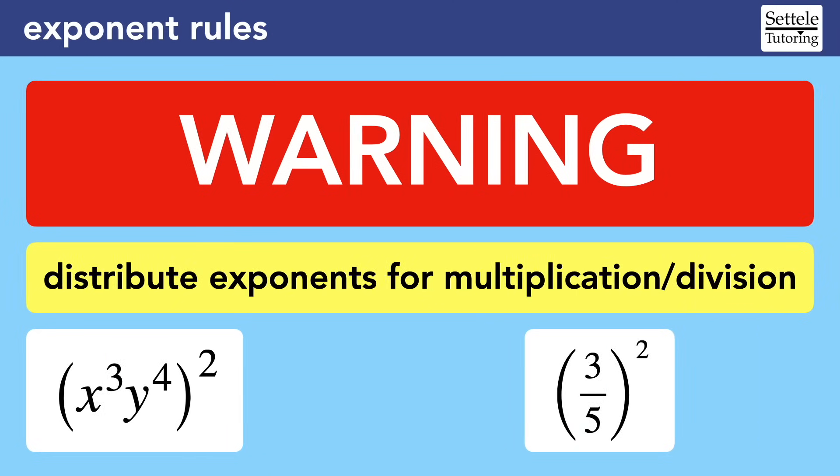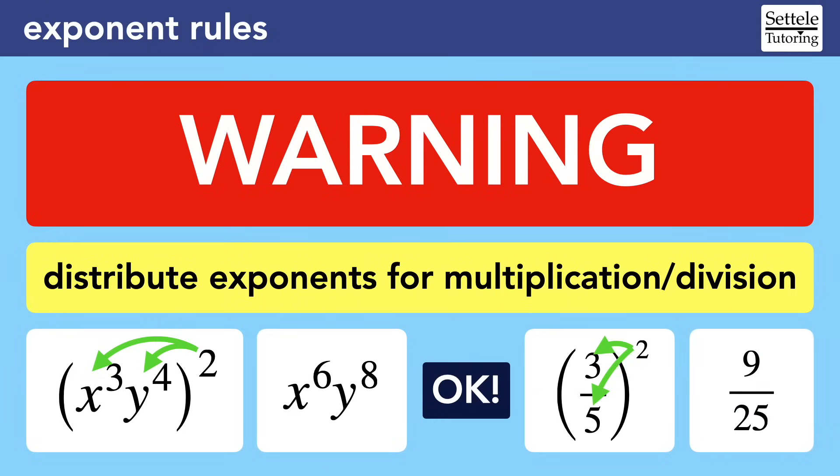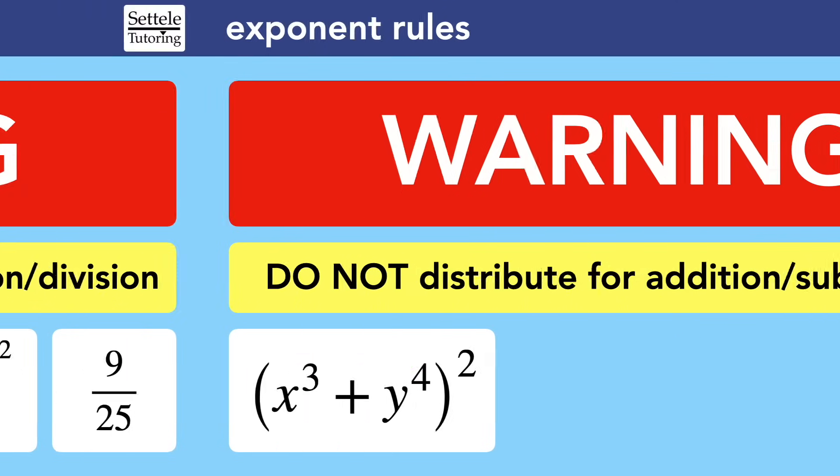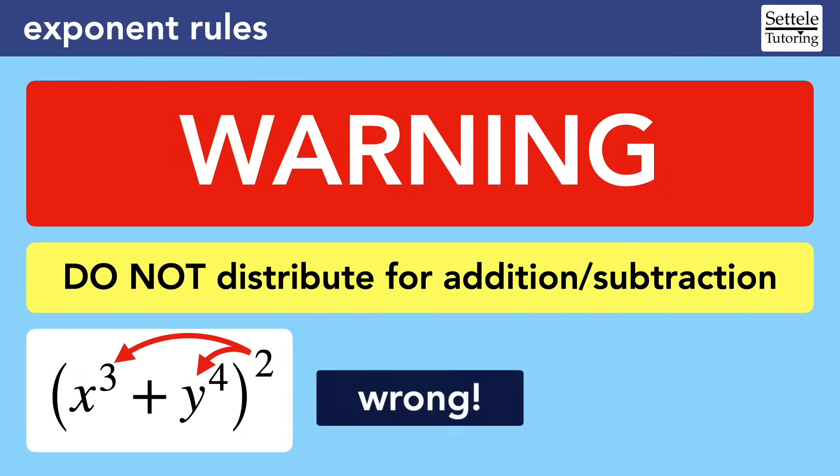Another warning has to do with the process of distribution, a step we use all the time in basic algebra. We have to be careful with how we use it with exponents. It's perfectly fine to distribute exponents when the bases are multiplied or divided. On the left, we have x to the third times y to the fourth in parentheses. The squaring applies to both terms, so we can distribute it. And since we have exponents raised to another exponent, we multiply the exponents, giving us x to the sixth times y to the eighth. Fractions raised to exponents work the same way, because the terms are divided. We can square the three and the five, giving us a simplified fraction of 9 over 25.